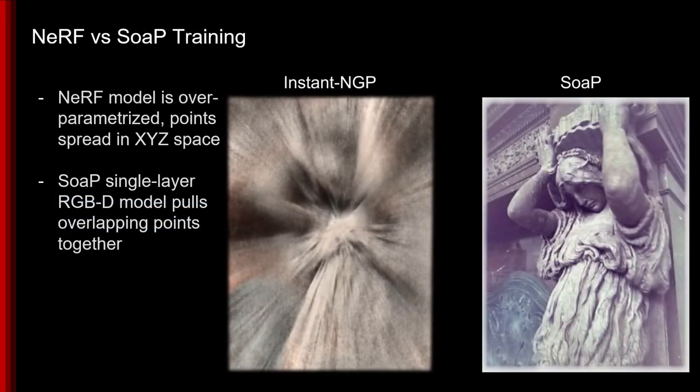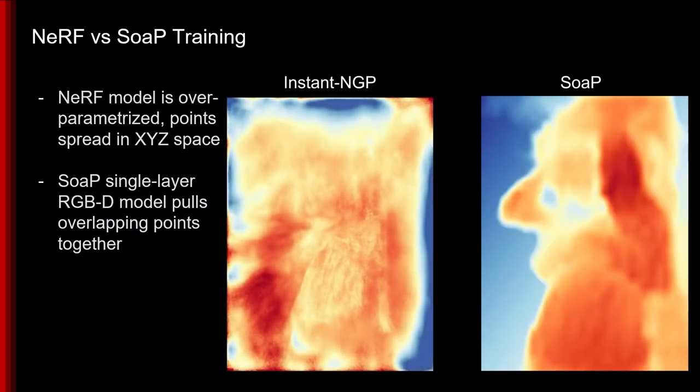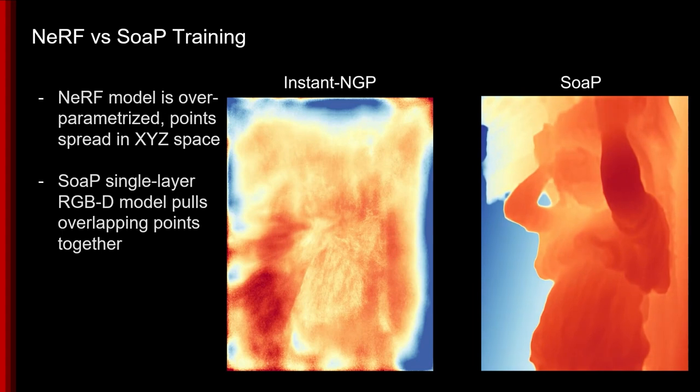Visualizing training, we see exactly this behavior. The NeRF model solves for fuzzy points floating in 3D world space. In contrast, our SOAP model aggregates points into a cohesive RGBD representation in camera space.